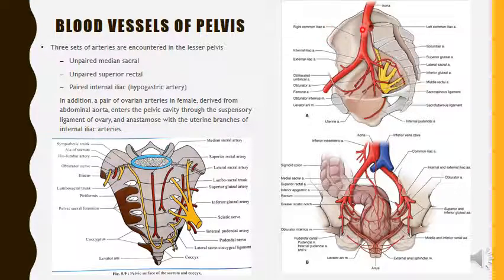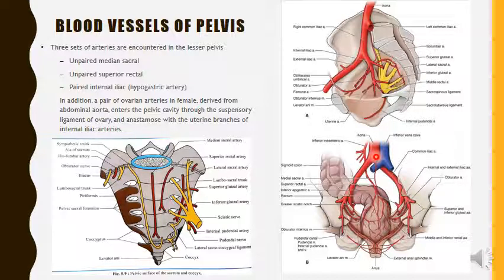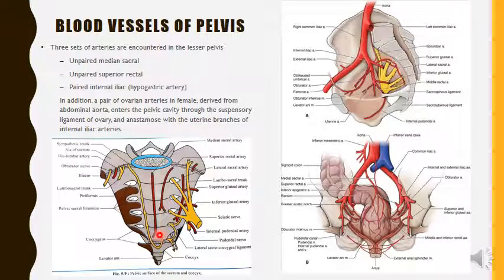The median sacral artery arises from the dorsal surface of the abdominal aorta, just above the aortic bifurcation into two common iliac arteries. The artery passes downwards in front of the body of the fifth lumbar vertebra and along the midline of the pelvic surface of the sacrum and coccyx.